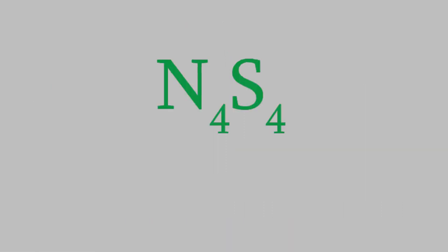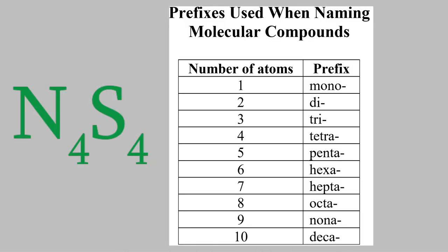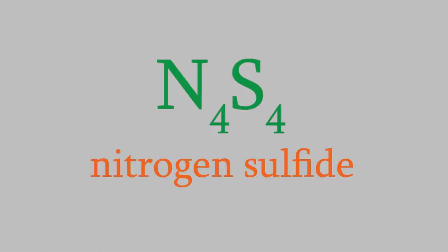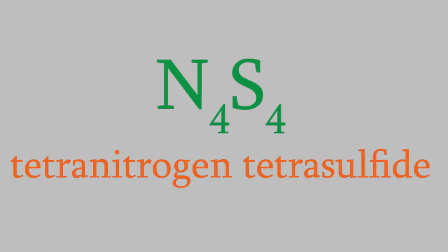If we try it for this molecule, we have nitrogen and sulfur, so we start by calling it nitrogen sulfide. Now we need to look at the chart, and we see that we have four of each of both the nitrogen and the sulfur. So the prefix we want is tetra. So this molecule is called tetranitrogen tetrasulfide.